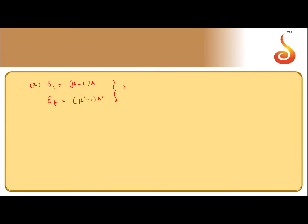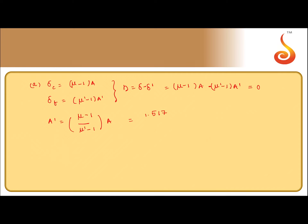The net deviation is D = δ − δ' = (μ − 1)A − (μ' − 1)A'. If the net deviation produced is zero, then this must equal zero. This gives A' = [(μ − 1)/(μ' − 1)] × A = (1.517 − 1)/(1.620 − 1) × 4°, so we get A' = 3.33°.